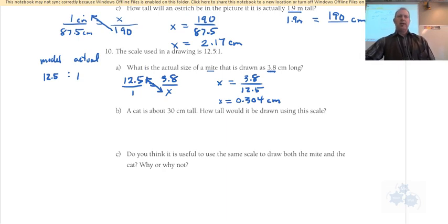Okay, so remember that, you know, the top here is the model, and the bottom is the actual. And if you keep that in line for the equation, both sides, then you can just solve for your unknown variable like we've been doing. So a cat is 30 centimeters tall. How tall is it drawn using the scale? Well, we have 12.5 to 1. Where do I put the 30? On top or on the bottom? Bottom. Yeah, the bottom is the actual, right?